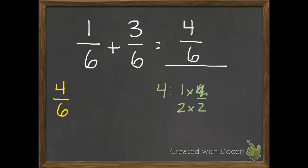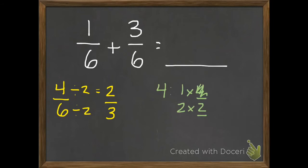I'm going to try my next greatest number, 2. My multiples of 2 are 2, 4, 6 — so that does go into 6 evenly. We're going to divide both of them by 2. 4 divided by 2 is 2, and 6 divided by 2 is 3. So 1 sixth plus 3 sixths equals 2 thirds after we put it in simplest form.